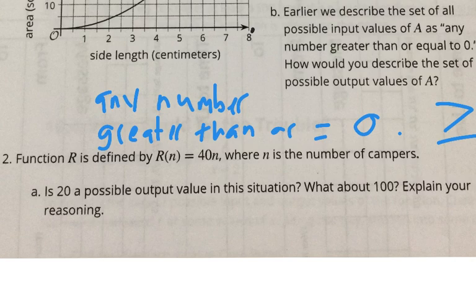Because 40 times a half would give the output of 20. But that doesn't make sense. So 20 is not a possible output. What about 100? Is that a possible output? No. How many campers would they need there? Two and a half. Two and a half campers to make $100, which again is not possible.